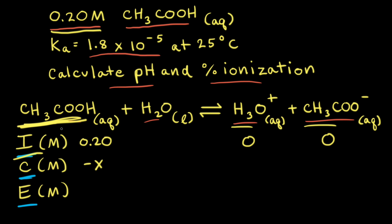We write minus X under acetic acid for the change part of our ICE table. When acetic acid reacts with water, we form hydronium and acetate, so we're going to gain in the amount of our products. From the mole ratios in the balanced equation, there's a one-to-one ratio of acetic acid to hydronium ion, so we write plus X under hydronium. For acetate, there's also a coefficient of one, so we write plus X under acetate as well.